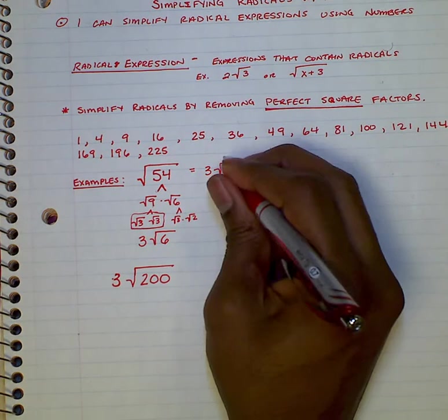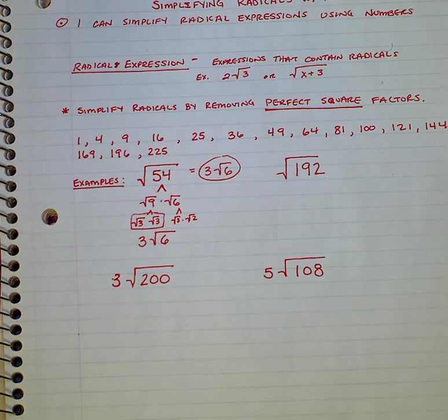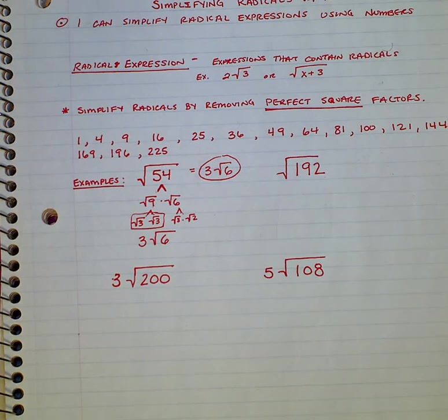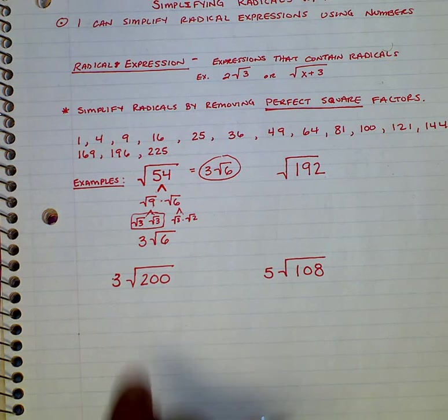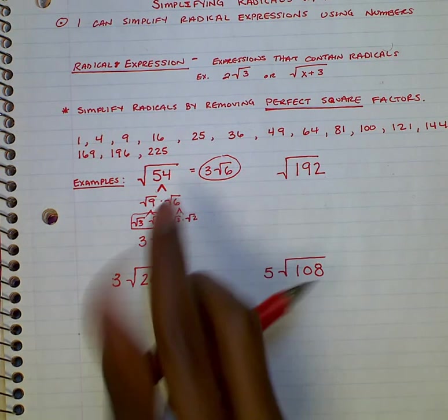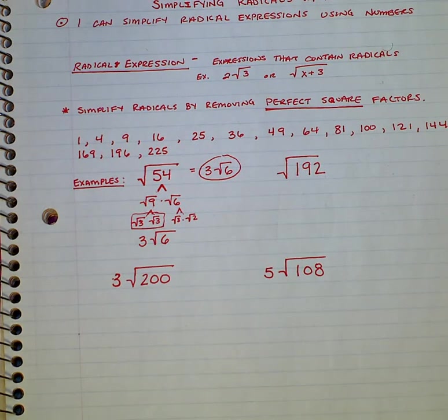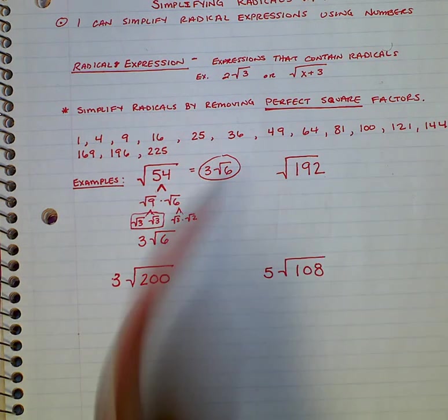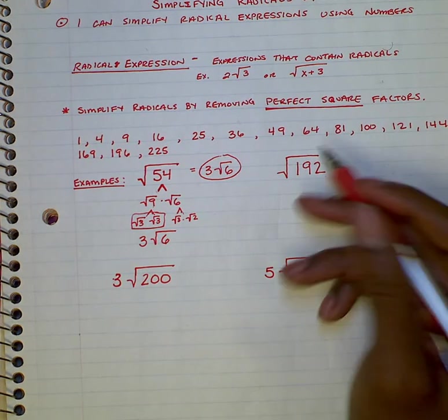Now this method that we use to simplify this is called the number tree. Factor tree is what I call it. It's because it just looks like trees and branches as you go, the further you go down. There's a benefit to using the number tree, and that's that you can just choose any two numbers that you know multiply to give you this. You can keep going, and in the end when we're done, we can find out all the factors and find all the matches. Another way that people like to do it is by taking the largest perfect square, or maybe even looking at this number and dividing it by the numbers in the list of perfect squares and seeing what's the largest one that divides evenly into it. Either way works.